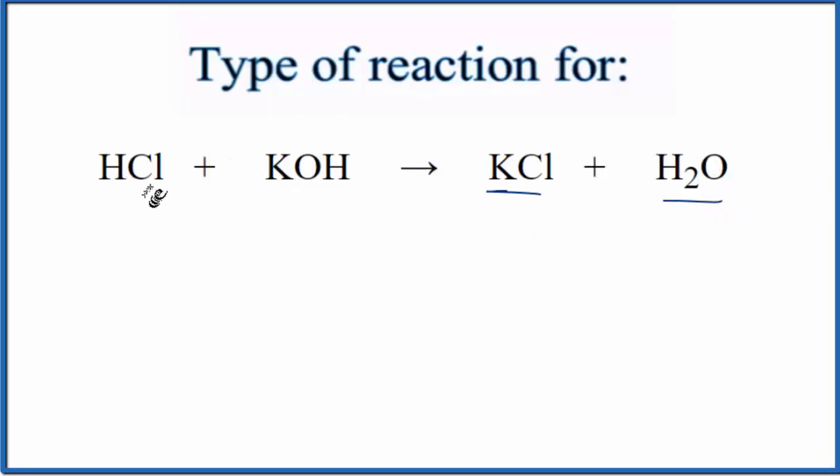If we look over here, we need to recognize that we have HCl, which is an acid, and KOH, which is a base. We know that HCl is an acid, or at least we suspect that, because it has this hydrogen in front of it.